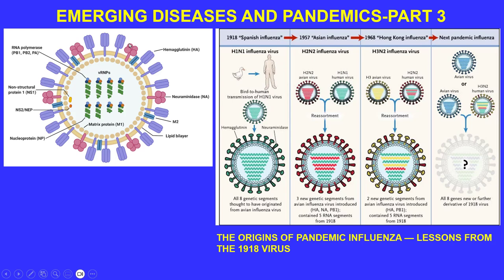Here is the influenza virus. There are two proteins on the exterior that help scientists classify the virus type — the naming scheme is H-number N-number, such as H2N1 or H1N2. The H stands for the hemagglutinin protein, and the N is the neuraminidase protein. This is an enveloped virus, and it also contains non-structural proteins and a nucleoprotein.